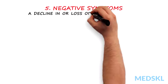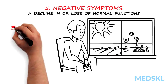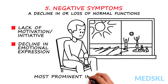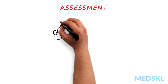5. Negative symptoms. Negative symptoms may be thought of as a decline in or loss of normal functions. Examples include lack of motivation or initiative, or a decline in emotional expression. Negative symptoms are most prominent in schizophrenia.